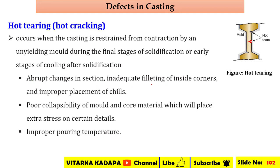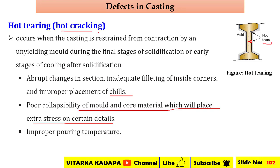Further causes of hot tearing include use of the direct solidification process, poor collapsibility of the mold and core material which places extra stress on certain areas, and improper pouring temperature — where initially the temperature is very high and later reduces, causing hot tearing. Hot tearing is also known as hot cracking.